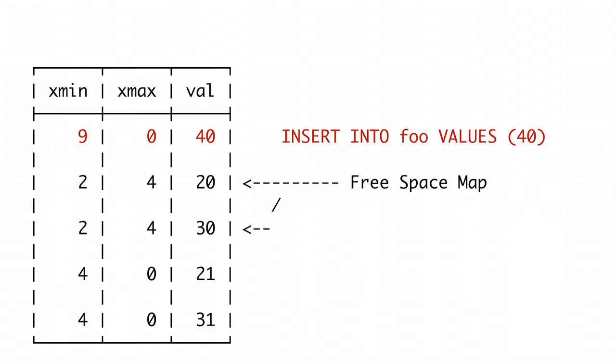The free space map is a tree where the leaf nodes point to positions and have the size of the contiguous spot, and the inner nodes are the max of the children. So you can look at the top of the tree and immediately know if you need to extend the table, because it'll tell you the biggest available spot. It's actually not WAL-logged, which makes it interesting. The basic idea: we mark places we can reuse in the future, and then we reuse them.